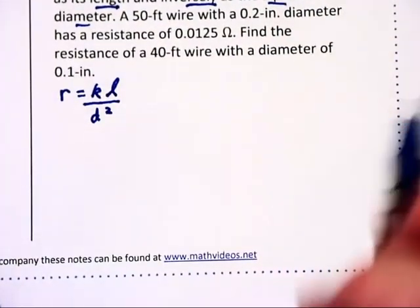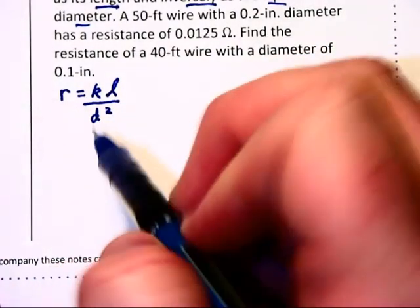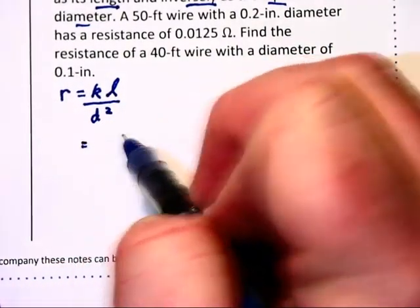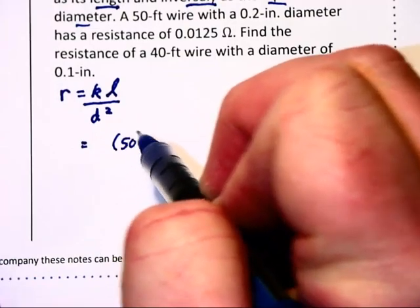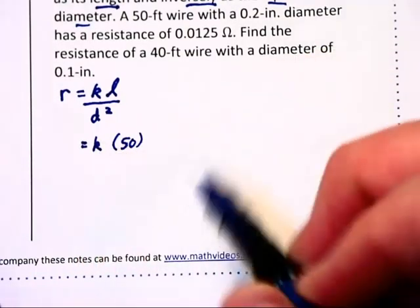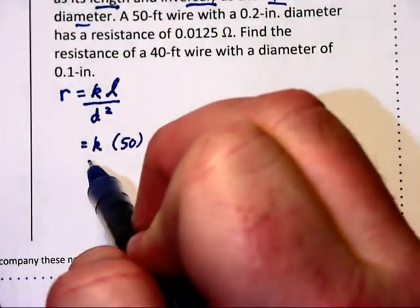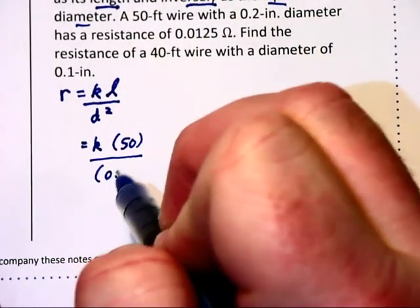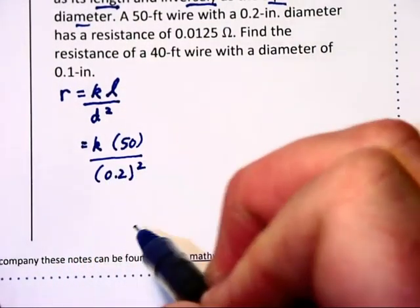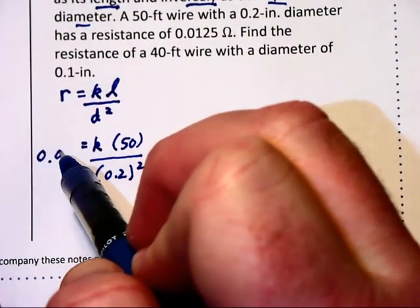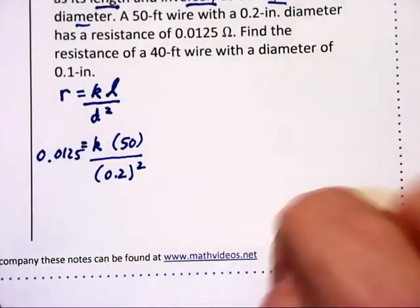Now, it says a 50-foot wire. Okay, that is going to be the length for 50. We're going to be solving for K with a 0.2-inch diameter. So 0.2 squared in the denominator has a resistance of 0.0125 ohms.